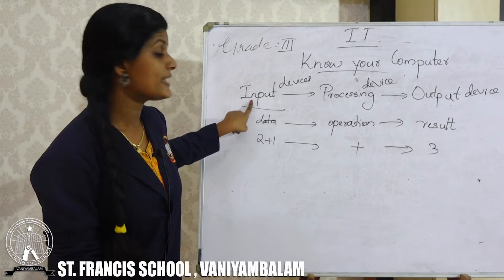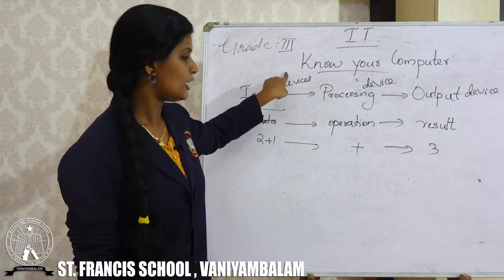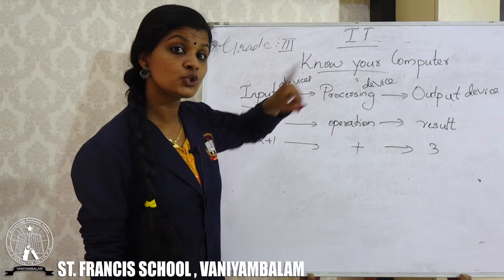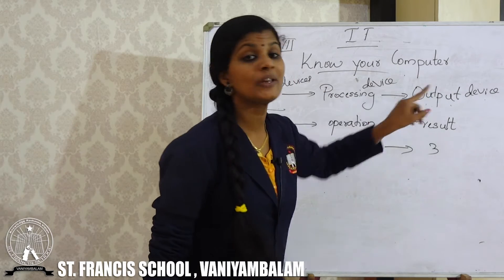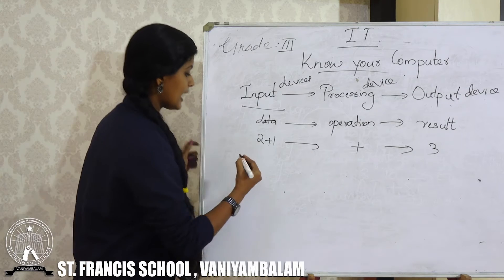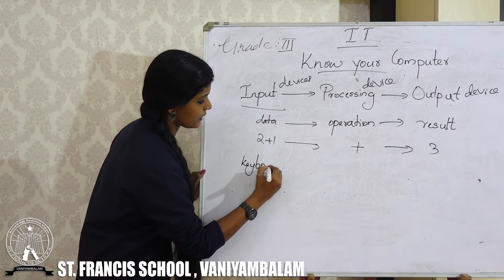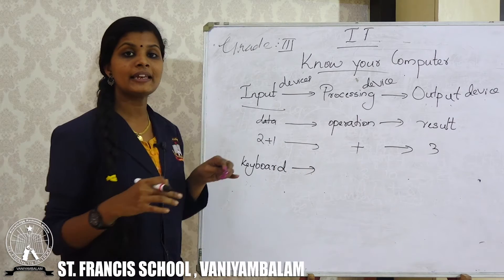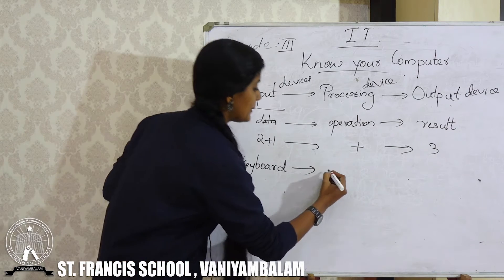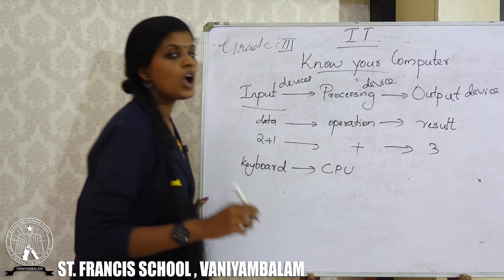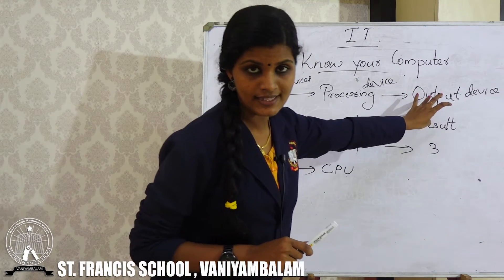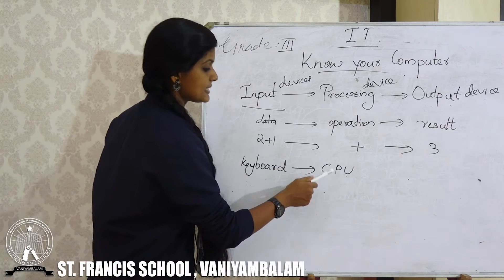First of all, we are entering some data or instruction into the computer using an input device. After that, processing — an operation will be done to that data. Then after the operation, we will get a result. For example, keyboard is an input device. Where is processing done? Processing will be done in the processing device, that is the CPU. We have only one processing device. There are so many input devices and output devices, but we have only one processing device — that is the CPU.